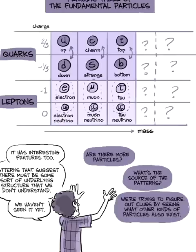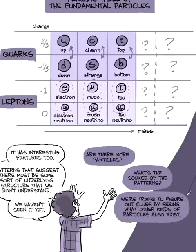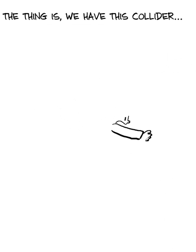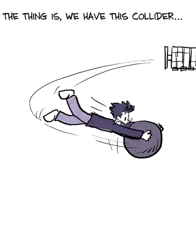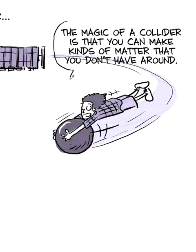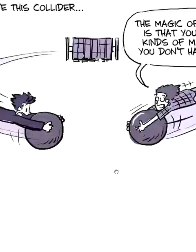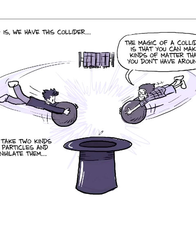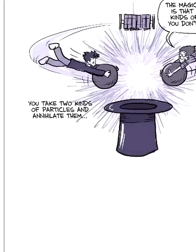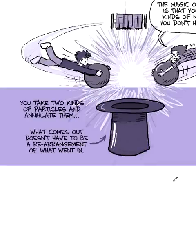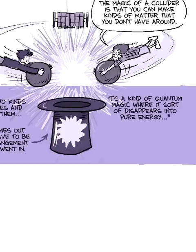They're trying to figure out clues by figuring out what other kind of particles also exist. Like what is out there? The thing is, we have this collider. And the magic of a collider is you can make kinds of matter in a collider that you don't have around. You can take two kinds of particles and annihilate them. And it's not like what comes out has to be a rearrangement of what went in. It's this quantum magic where it sort of disappears. It's pure energy.